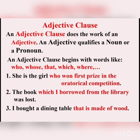Now we are going to learn how a subordinate clause functions as an adjective — a word which describes a noun or a pronoun. For example, 'She is the girl who won first prize in the oratorical competition.' The clause 'who won first prize in the oratorical competition' is the subordinate clause, and 'who' refers to 'that girl' — it describes her, making it an adjectival clause. Another example: 'The book which I borrowed from the library was lost.' Here 'the book was lost' is the main clause, and 'which I borrowed from the library' describes the book — it is an adjective clause.